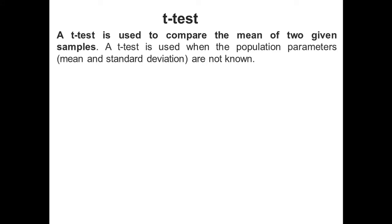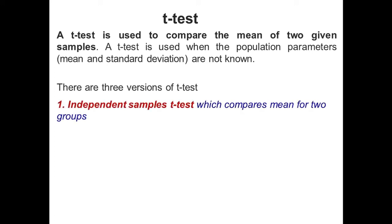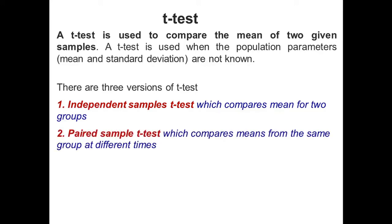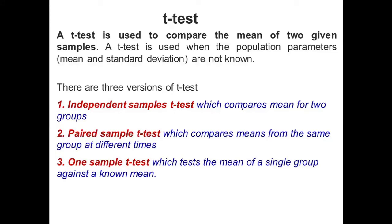T test: A T test basically works on the same principle as the Z test. A T test is used to compare the mean of two samples. Like the Z test, a T test also assumes a normal distribution of the sample. A T test is used when the population parameters like mean and standard deviation are unknown. There are three versions of T test: first, independent sample T test, which compares the mean of two groups; second, paired sample T test, which compares means from the same group at different times; and third, one sample T test, which tests the mean of a single group against a known mean.